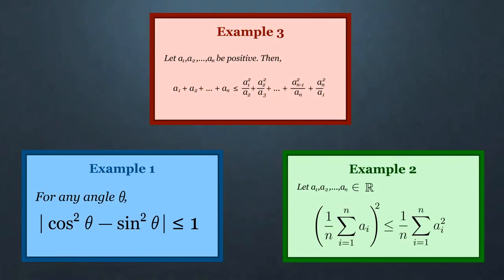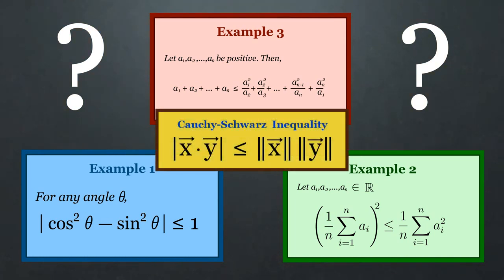One last remark, after seeing these examples, one natural question to ask is when is equality achieved in the Cauchy-Schwartz inequality? That's a very good question. We will save this discussion for the next chapter after we introduce if and only if proofs.